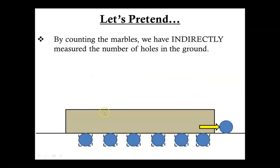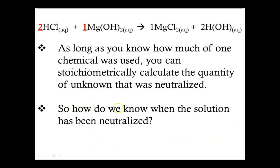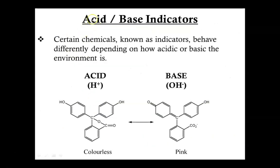Now in the example of the tunnel and the holes, it's very easy to know when you've filled up all the holes because a marble rolls out. But how do you know when a solution has been neutralized? Well, we use acid-base indicators — chemicals that behave differently depending on how acidic or basic the environment is.